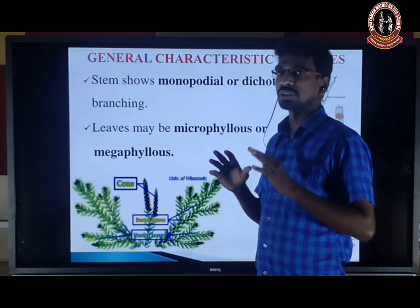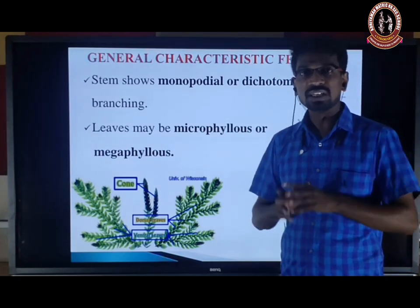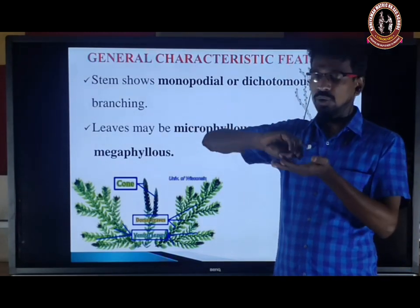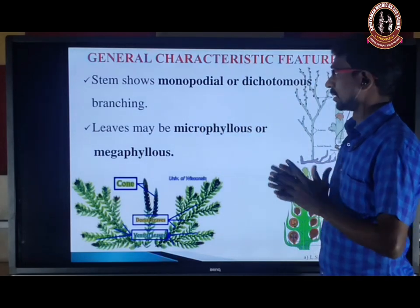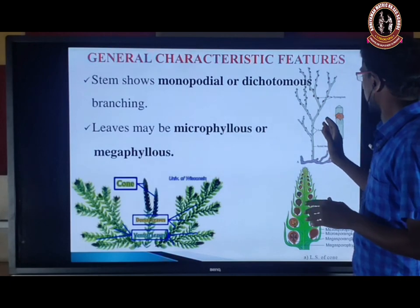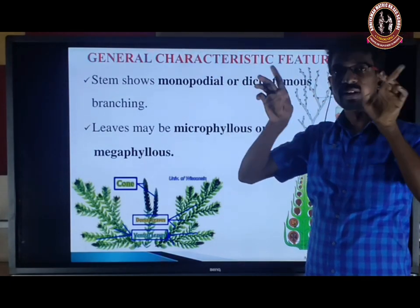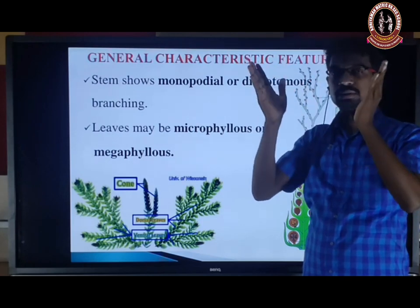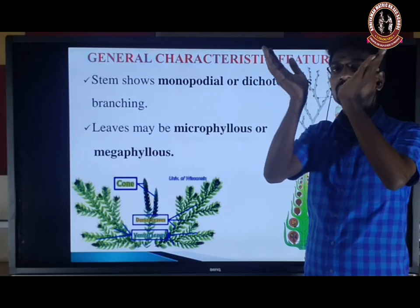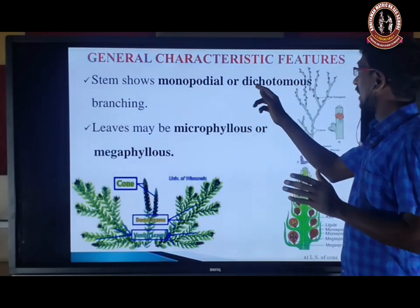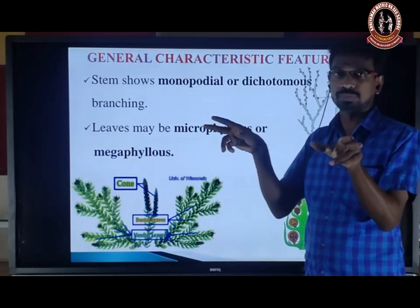The stem shows monopodial or dichotomous branching. Monopodial means there are no branches — it grows only in one direction. In dichotomous branching, it divides into two branches; each two branches produce again two branches — dividing in two, like a fork.